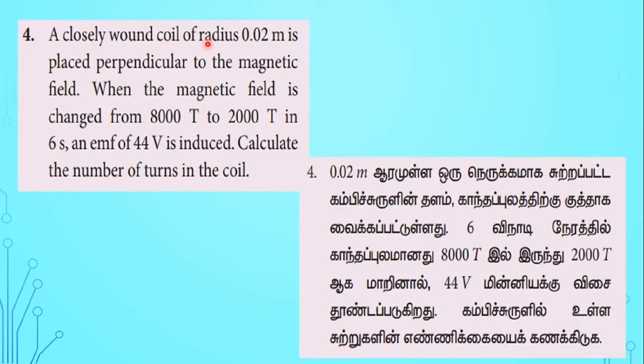A closely wound coil of radius 0.02 meters is placed perpendicular to the magnetic field. When the magnetic field is changed from 8000 tesla to 2000 tesla in 6 seconds, an emf of 44 volts is induced. Calculate the number of turns in this coil.